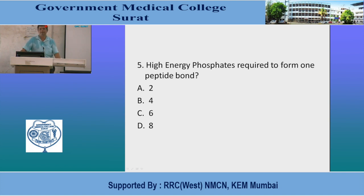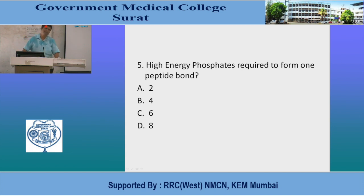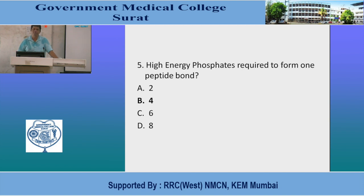MCQ: High-energy phosphate required to form one peptide bond: 2, 4, 6, or 8? For each amino acid, the aminoacyl-tRNA is initially activated using 2 ATP (amino acid + tRNA complex + AMP formation). Then during elongation, 2 GTP are used. So total 4 high-energy phosphates are used per amino acid and per peptide bond. For 20 amino acids, 20 × 4 = 80 ATP are used. The answer is 4.